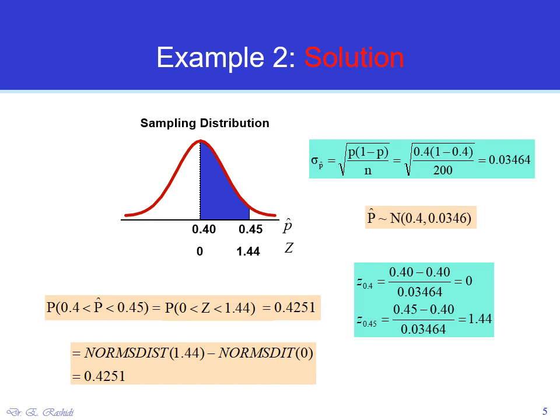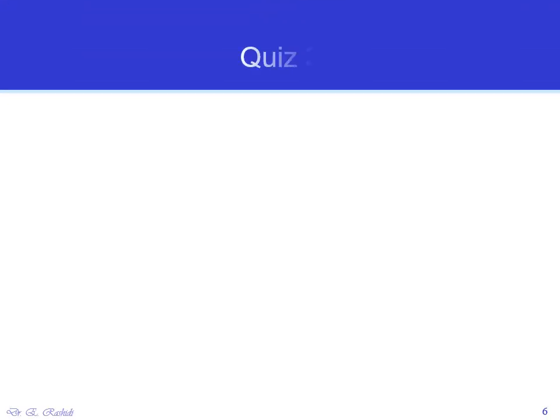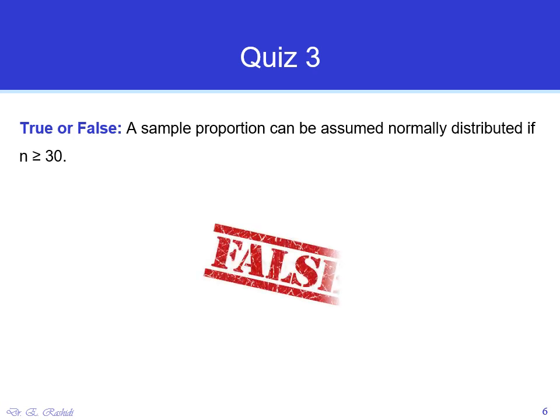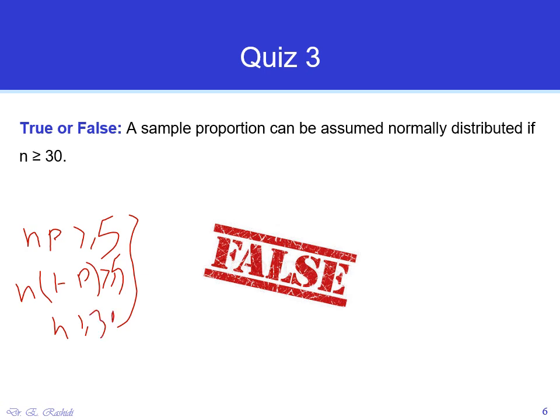The probability that P̂ is between 0.4 and 0.45 is about 43%. Quick quiz — true or false: a sample proportion can be assumed normally distributed if N > 30. This is false, because we need three conditions: N×P ≥ 5, N×(1−P) ≥ 5, and N large enough. Since those conditions were not all stated, the statement is not correct — it's false.